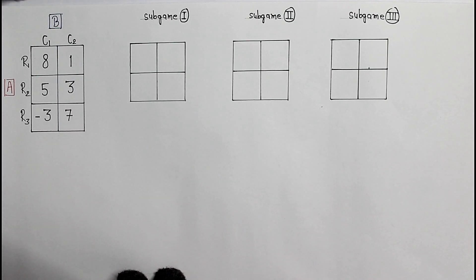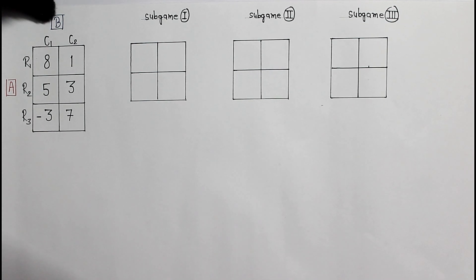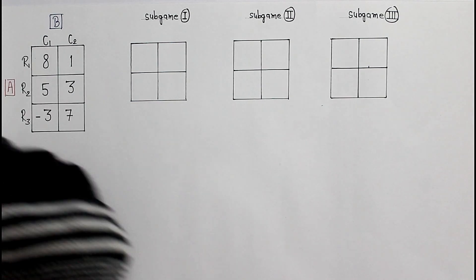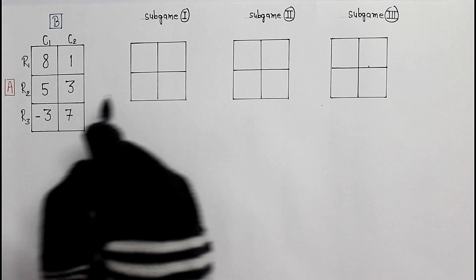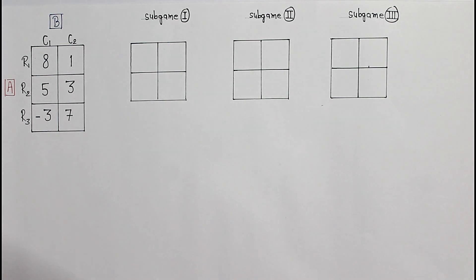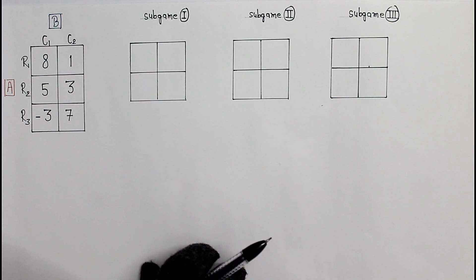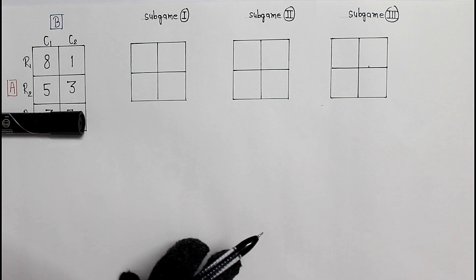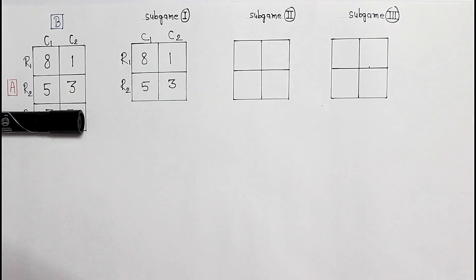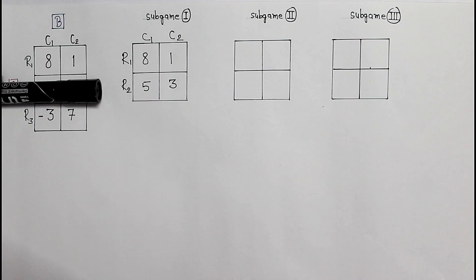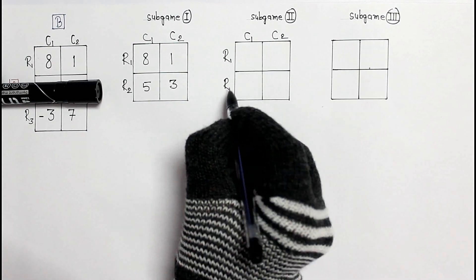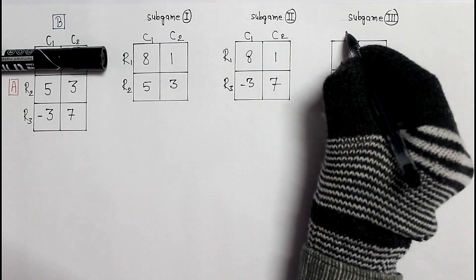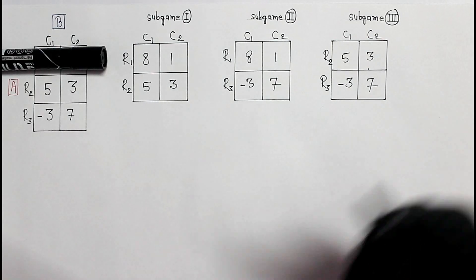Now for another question: this time we have an m by 2 game — that means only 2 columns and more than 2 rows. This is a 3 by 2 matrix and we have to split it into 3 small sub games. This time we will be hiding each row one by one. First, hiding the third row gives sub game number 1. Then hiding the second row gives sub game number 2. And hiding the first row gives sub game number 3.